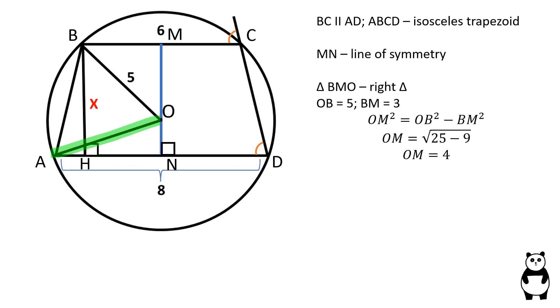Let's connect point O to point A. Triangle AON is a right triangle. OA is equal to 5. AN is equal to 4 since N is the midpoint of AD. We can find ON using the Pythagorean theorem. ON is equal to square root of 25 minus 16, which is 3.